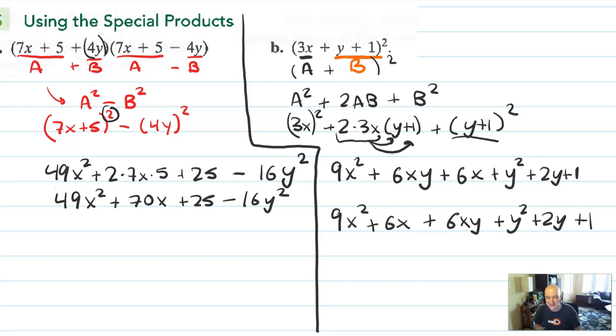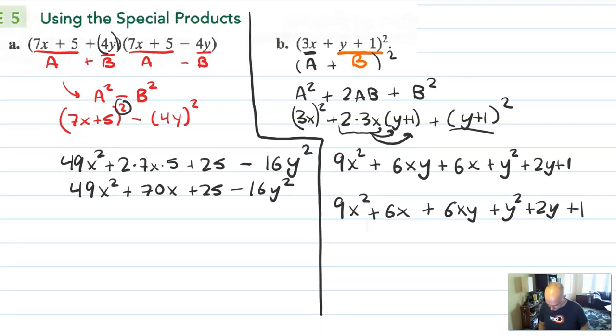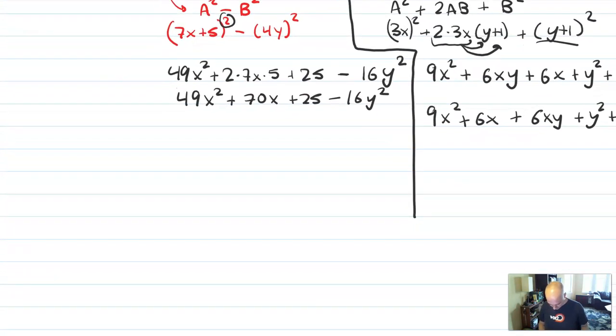So those are just examples of how you can use your knowledge of special products to multiply things a little more efficiently than you otherwise would. And it's important to practice those products now when you're multiplying because in the next section we will be factoring. And in that section on factoring it really really helps if you can recognize the special products whenever they appear.